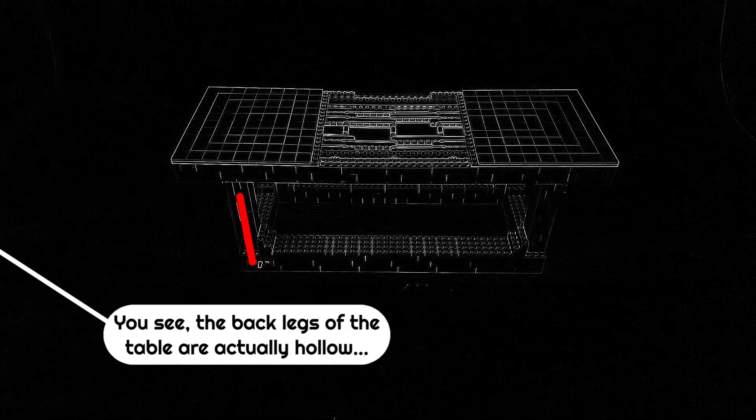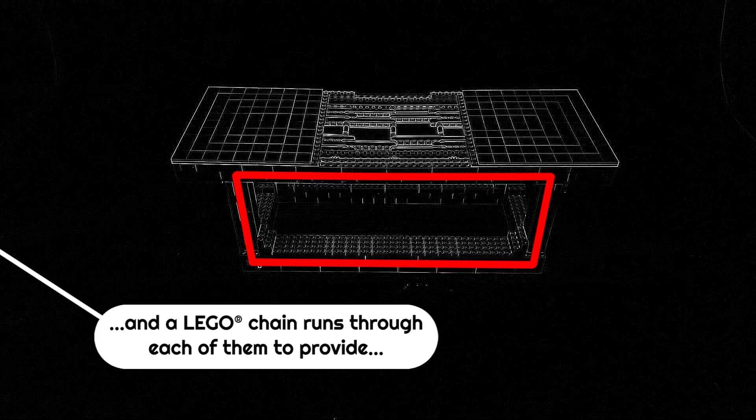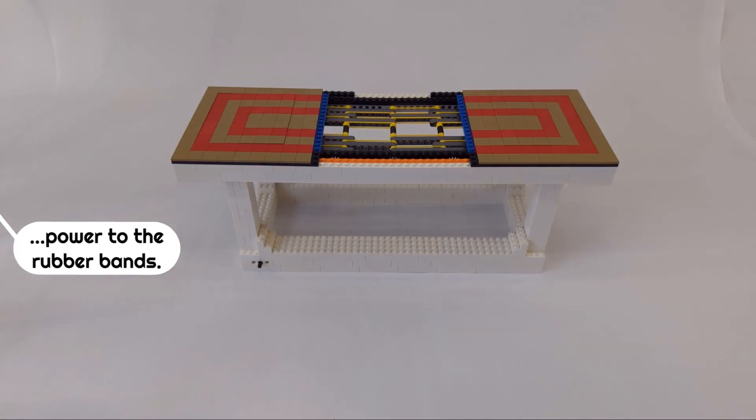You see, the back legs of the table are actually hollow, and a Lego chain runs through each of them to provide power to the rubber bands.